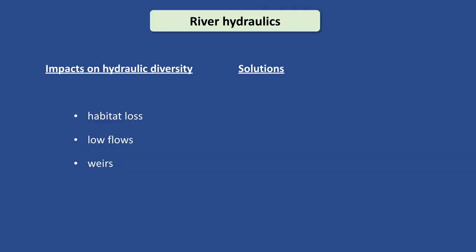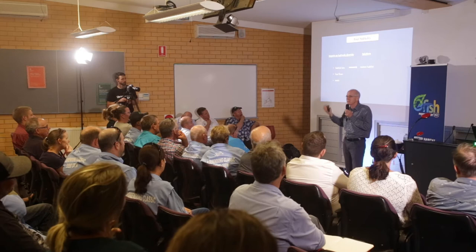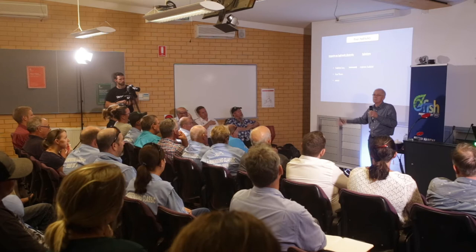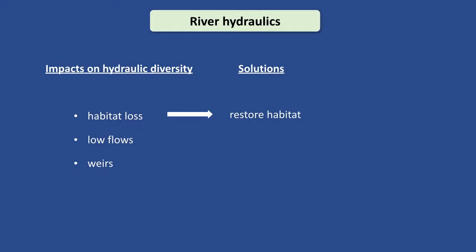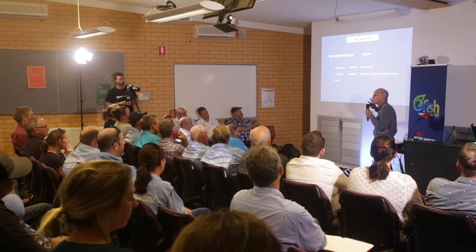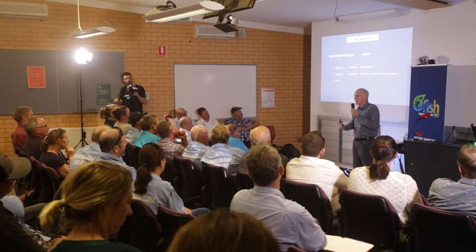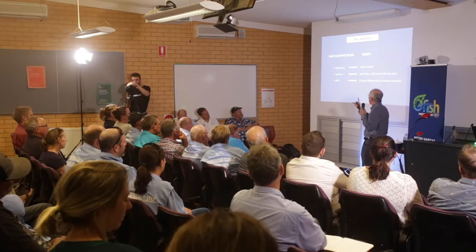We know there are solutions to these impacts. Matt has talked a lot about restoring habitat - that is such a fantastic thing to do, because you think you're putting physical habitat in, but you're actually creating hydraulic diversity as well. For low flows, we need to actually rethink how we manage rivers and base flows - especially about the Darling and the Macquarie. It needs to be enough to create this flume water habitat to sustain fish and prevent blue-green algae.